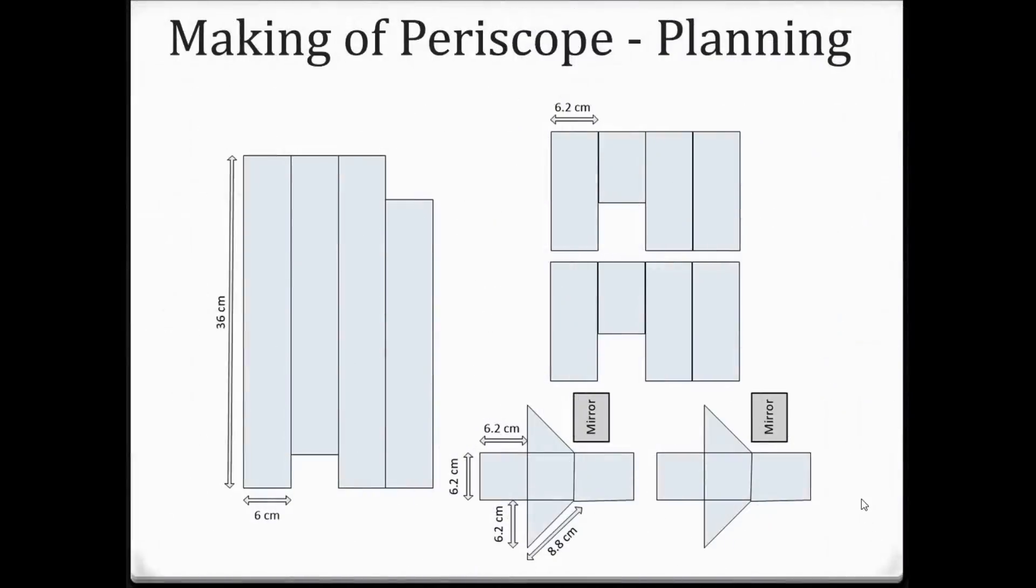This slide shows how to make it. To make it you need to do some planning. There are three pieces: this is a vertical piece, this is the horizontal piece, and this is another horizontal piece. This piece will go on the top, this will go on the bottom. The height I'm using is 36 centimeters, the width of each side will be 6 centimeters.